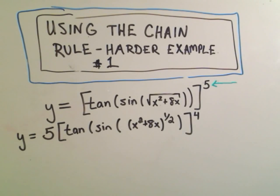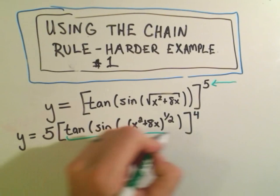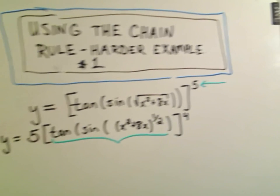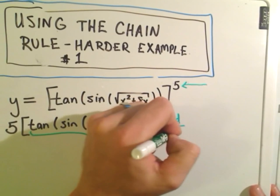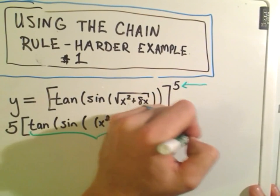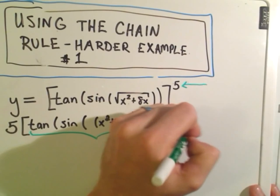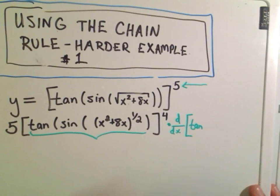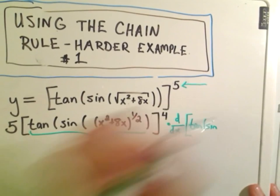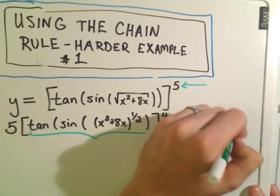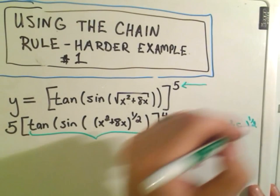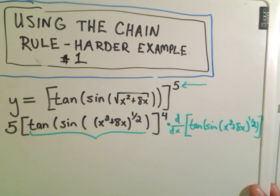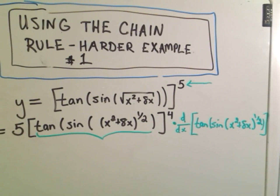But then I have to multiply that by the derivative of all of the inside stuff, so I'm going to run out of room here, these problems get so long. So I'm going to have to multiply that by the derivative of the inside stuff, which again is tangent of sine of x squared plus 8x raised to the one-half. Can I get it all in there? Parentheses, brackets, alright, I think we just about got it.